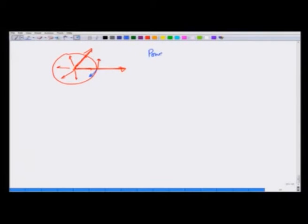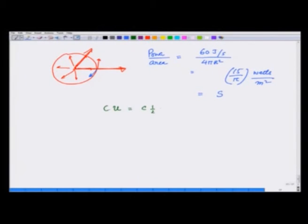The power carried per unit area in this case is going to be 60 joules per second divided by 4 pi r squared. r we are taking to be 1 meter. So this is 15 over pi watts per meter squared, that is the power. And what is this power per unit area or energy per unit area per unit time? This is precisely equal to the Poynting vector. And therefore, what we have is C u, which is C times one half epsilon 0 E0 squared, is equal to 15 over pi, and I want to calculate E0.